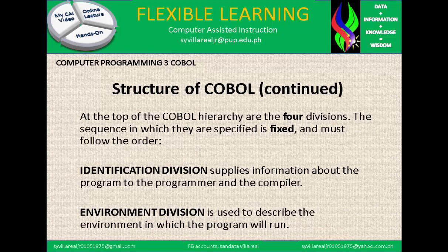Structure of COBOL continued: at the top of the COBOL hierarchy are the four divisions. The sequence in which they are specified is fixed and must follow the order. The first one is the identification division, which supplies information about the program to the programmer and the compiler — the name of the program, the name of the compiler, and the programmer's name must be indicated in the identification division.